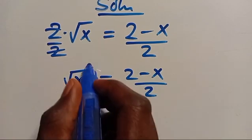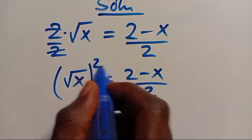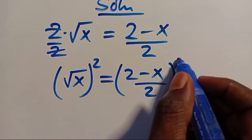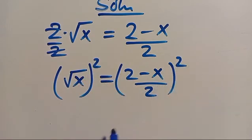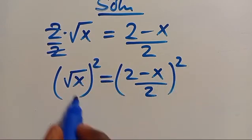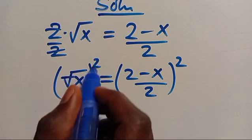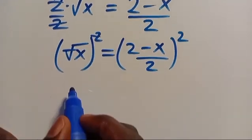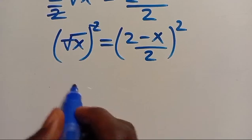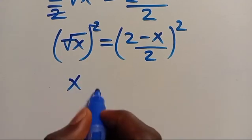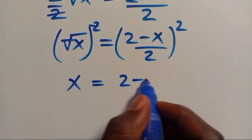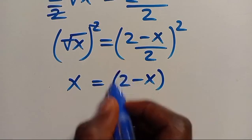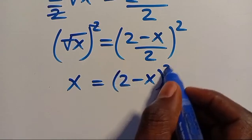Then let's square both sides. This square will cancel out the root, so we are going to have X equal to 2 minus X in parenthesis, to the power of 2.